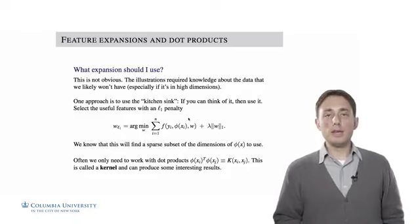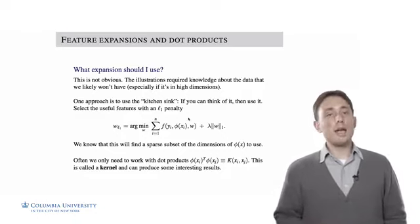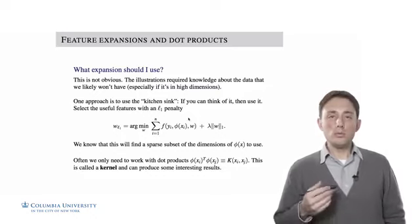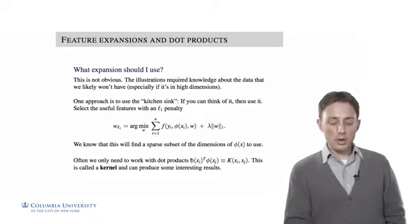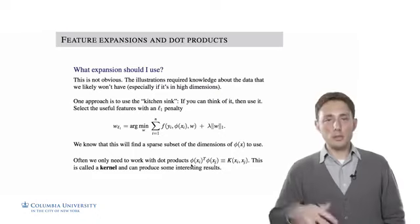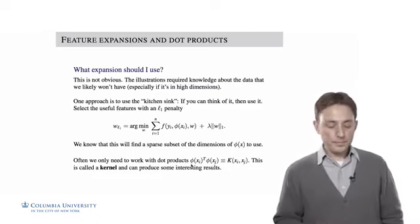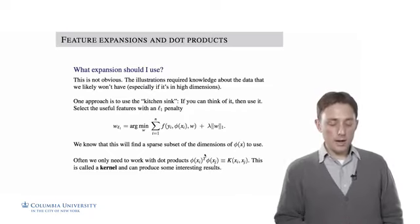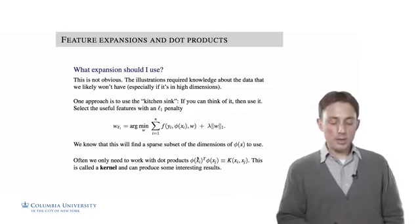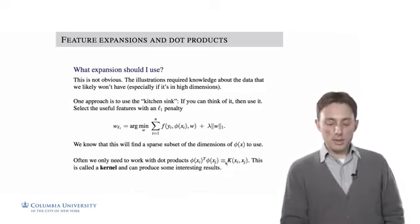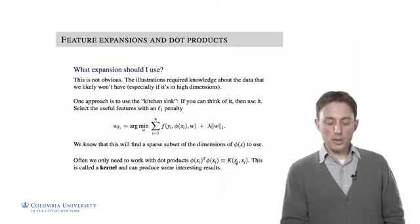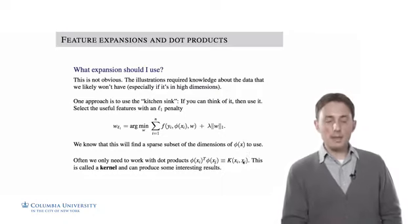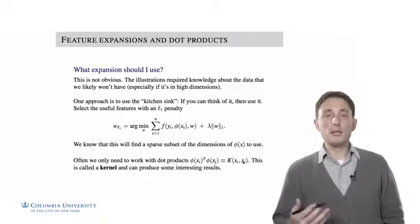However, to motivate the rest of the lecture: for many models it can actually be shown that we don't need to work in the feature expansion space at all — all we ever need to work with are the dot products between our feature expansions. We define this dot product between the feature expansion for two data points to be something called a kernel: K(x_i, x_j) = phi(x_i)^T phi(x_j). Thinking about the problem this way can lead to some interesting results.